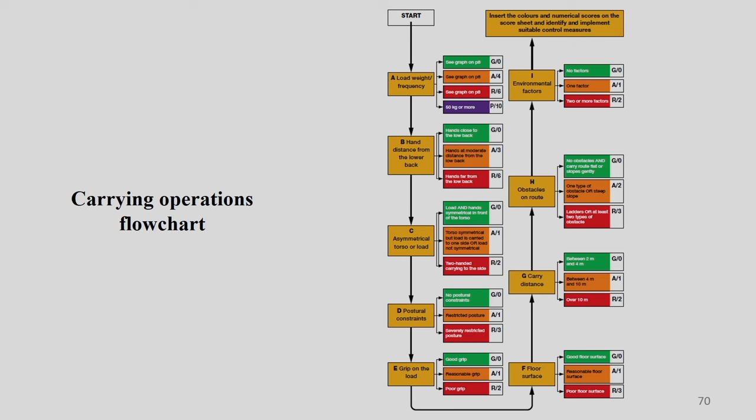Once we add these values, if the total value is very high, it indicates you need a lot of intervention at various points — specifically at the red zone and the purple zone. If it is in the green zone then it is good; the orange zone has some hazard. I just want you to recall whatever we studied for the lifting. Now let us go with this carrying section.